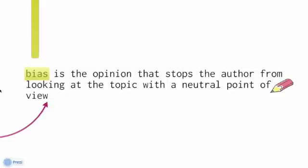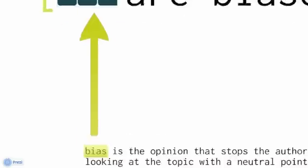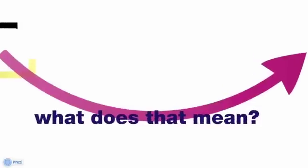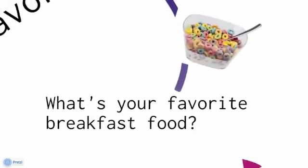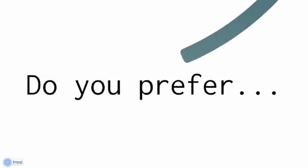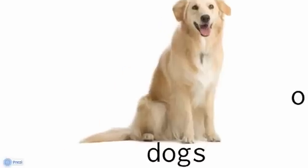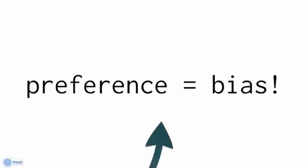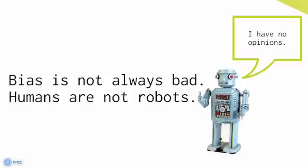What is bias? From our vocab word in class, bias is the opinion that stops the author from looking at the topic with a neutral point of view — they're only taking one stance and giving information on that stance. For example, if someone asks you what's your favorite breakfast food, that favorite equals bias. Or what do you prefer, dogs or cats? That preference equals bias.